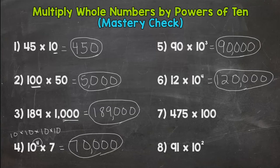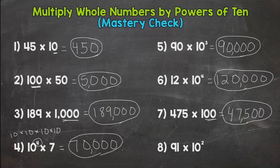Number seven, 475 times 100. So we have two zeros. That means we need to push the four two spots to the left, the seven two spots to the left, and the five two spots to the left on our place value chart. And we do that by using two placeholder zeros on the end, and we get 47,500.